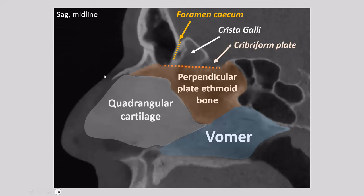Finally, the maxillary sinus gets drained by the infundibulum. This is the maxillary sinus, and then here is this very small passageway — the infundibulum — which also drains in the middle meatus. So what all these passageways have in common — the frontal recess, the ethmoid bulla, and the infundibulum — is that they all drain in the middle meatus. If we combine the frontal recess draining the frontal sinus, the ethmoid bulla draining the anterior ethmoid cells, and the infundibulum draining the maxillary sinus, we call this combination the ostiomeatal complex.